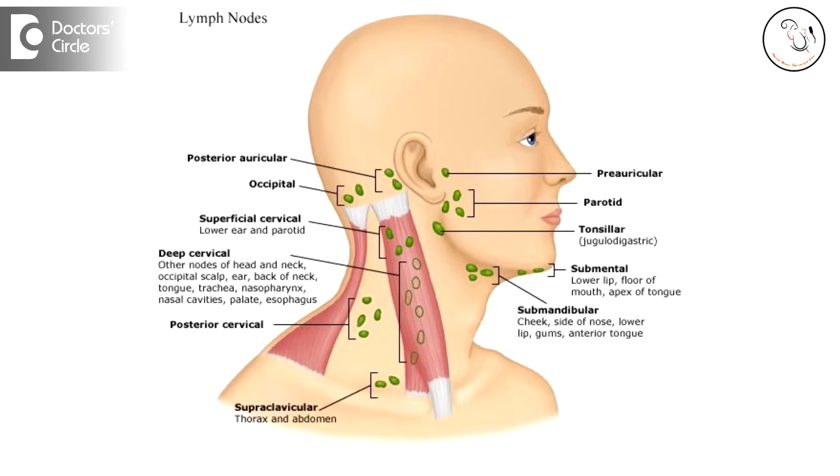The patient comes to us with a lump behind the ear. Now we need to understand what are the structures which are around the ear. This is called the pinna, the outer ear. The area behind this has a bone called the mastoid bone, and there is a muscle which connects the mastoid bone to our collar bone called the sternocleidomastoid.